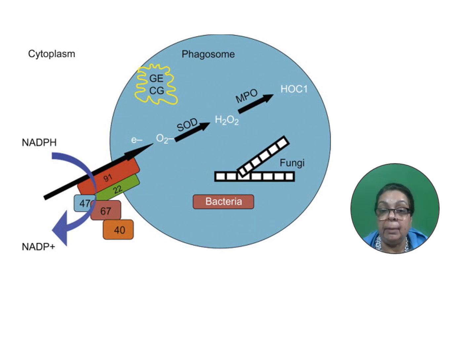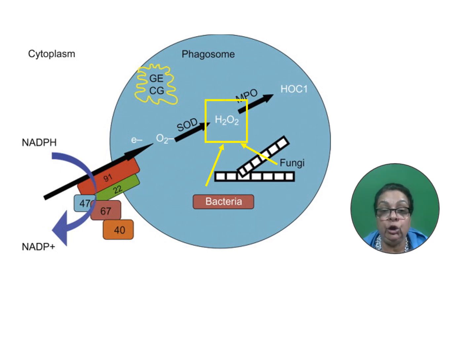However, macrophages can utilize the bacterial or fungal hydrogen peroxide to generate HOCl, which can kill microorganisms.